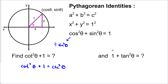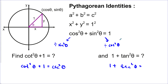For the other form, we divide by cos squared theta instead. Cos squared theta divided by cos squared theta gives 1. Sine squared theta divided by cos squared theta gives tan squared theta. And 1 divided by cos squared theta is secant squared theta. So these are the three different forms of the Pythagorean identity, and you can use any of these three in the future.